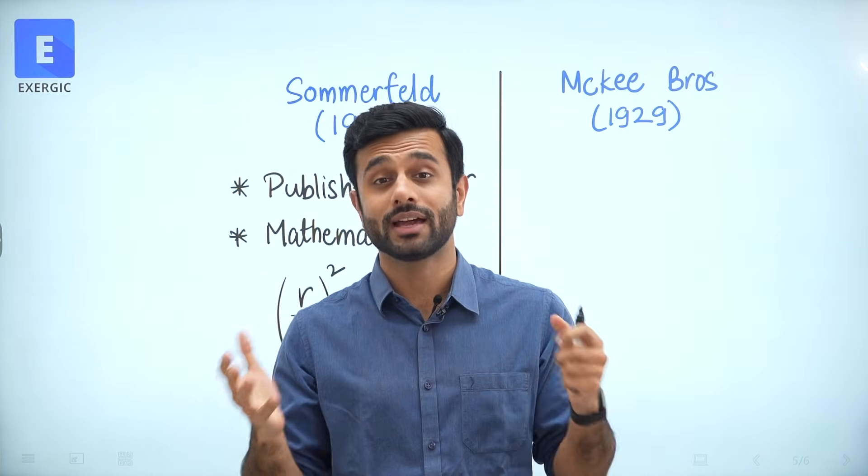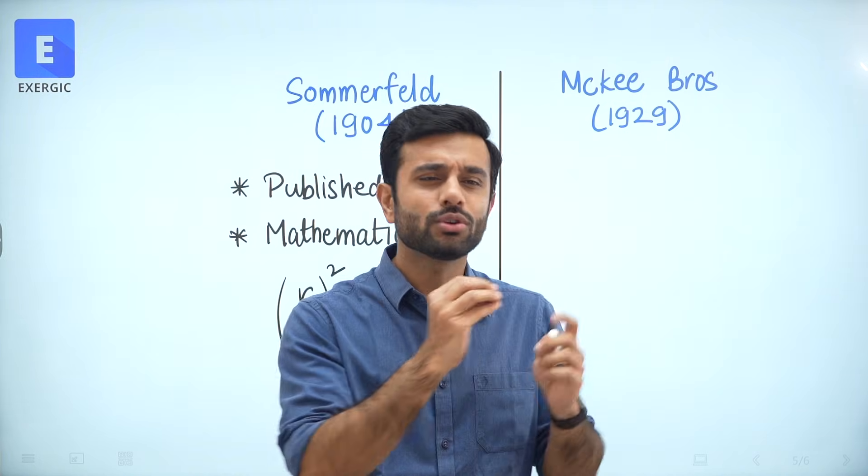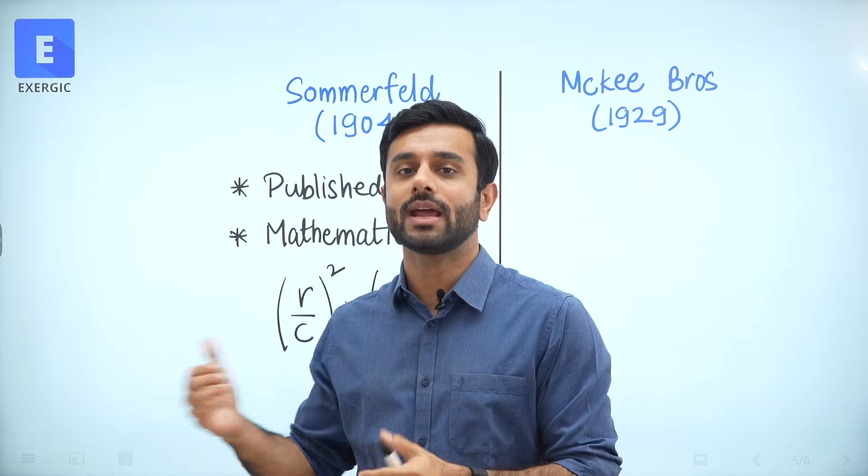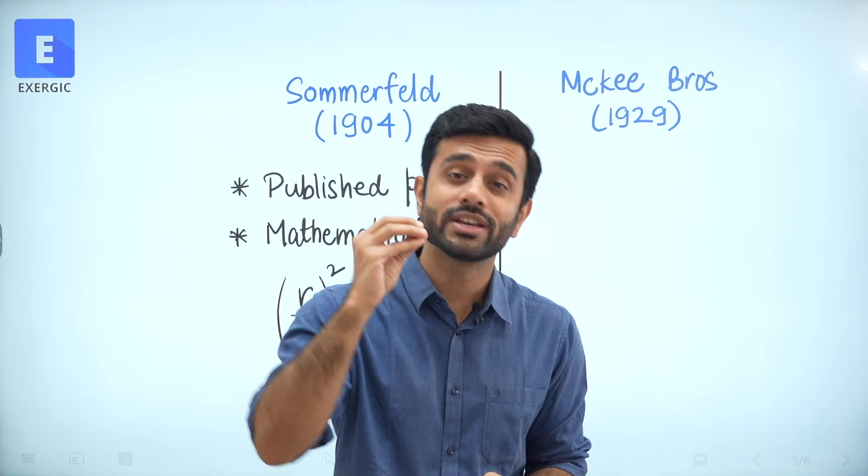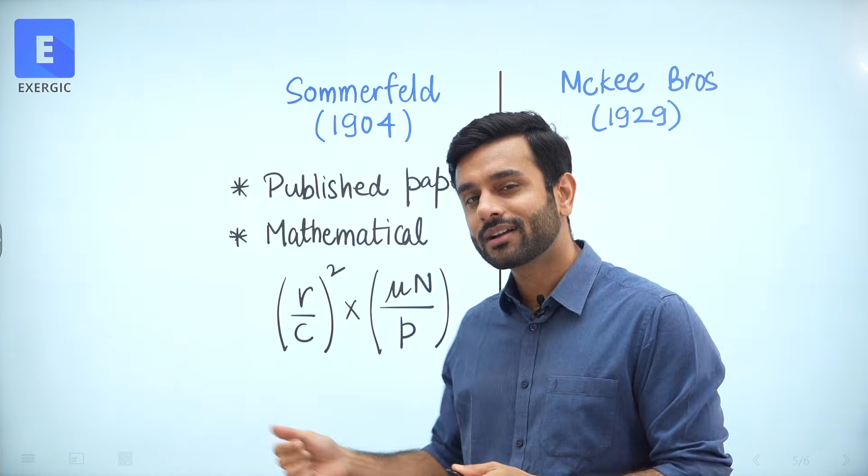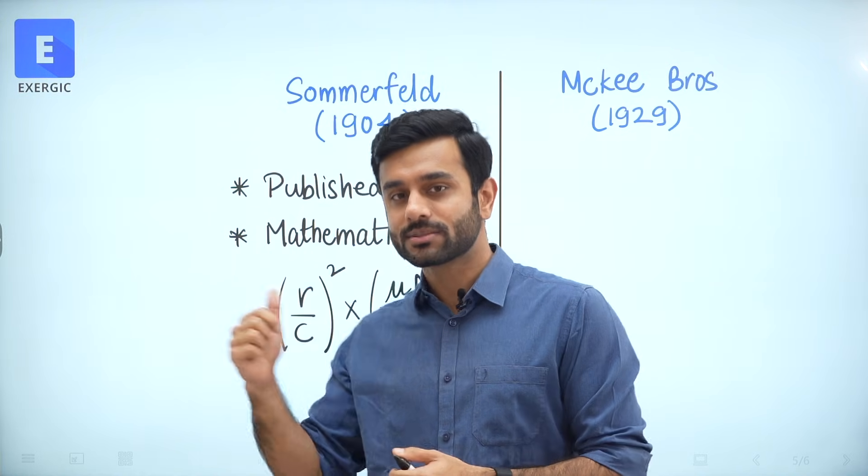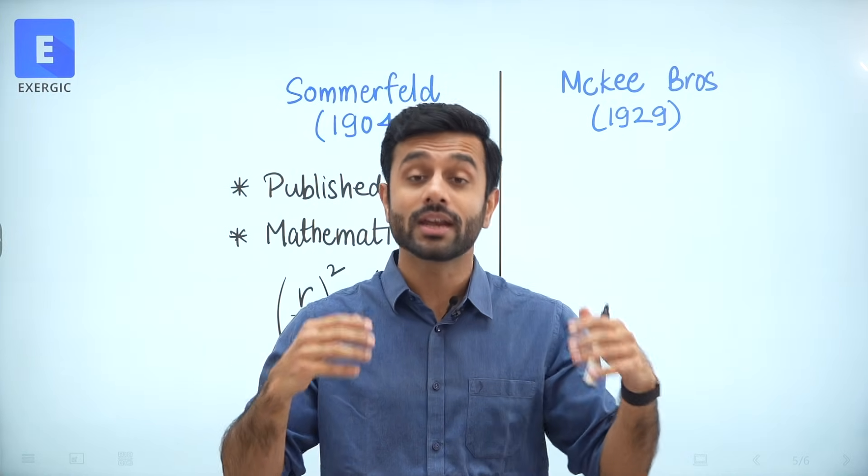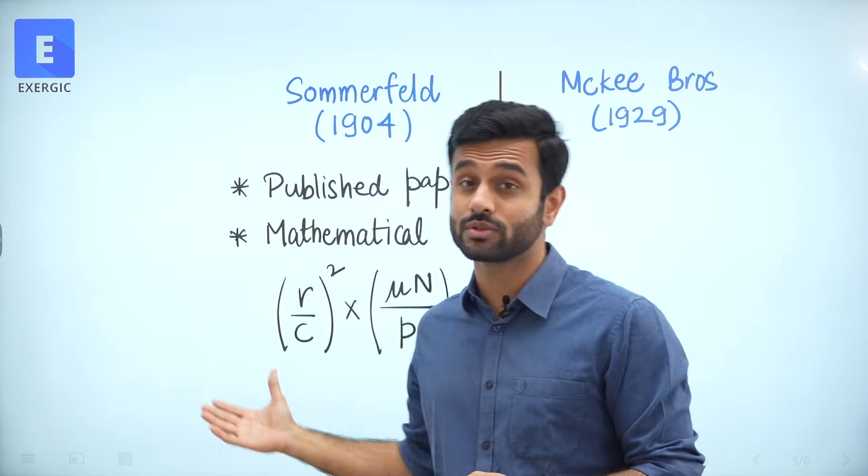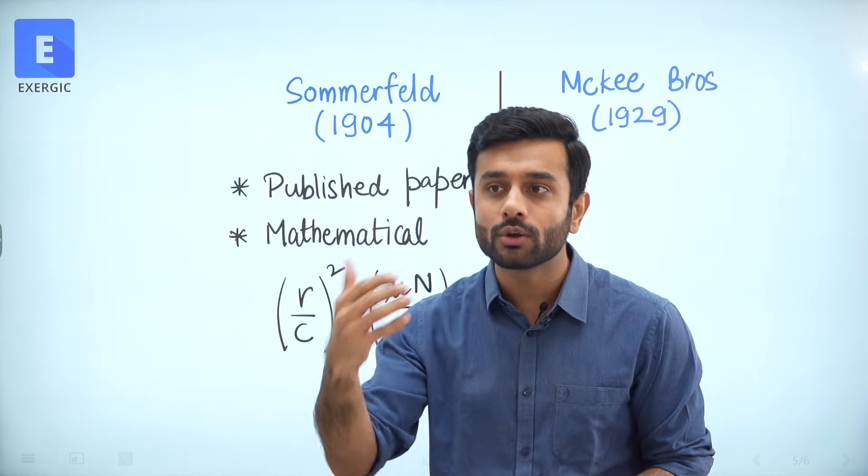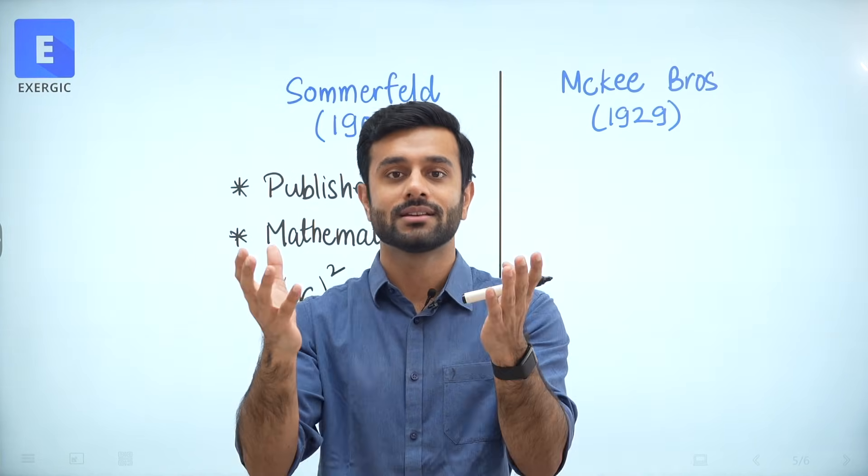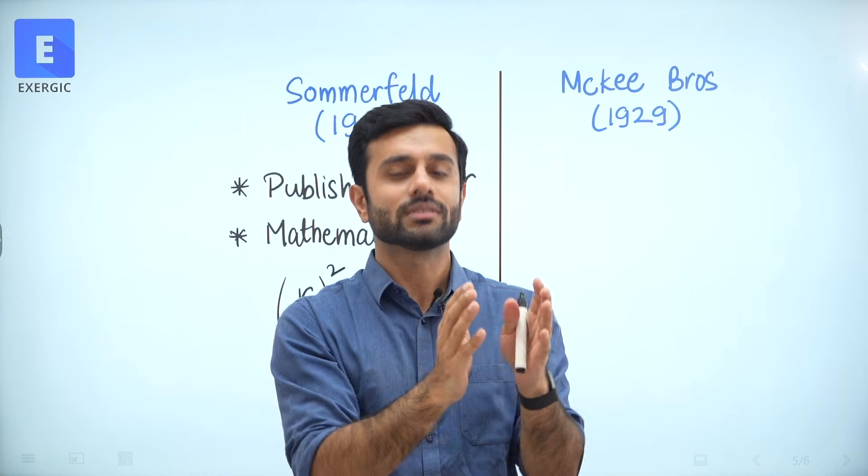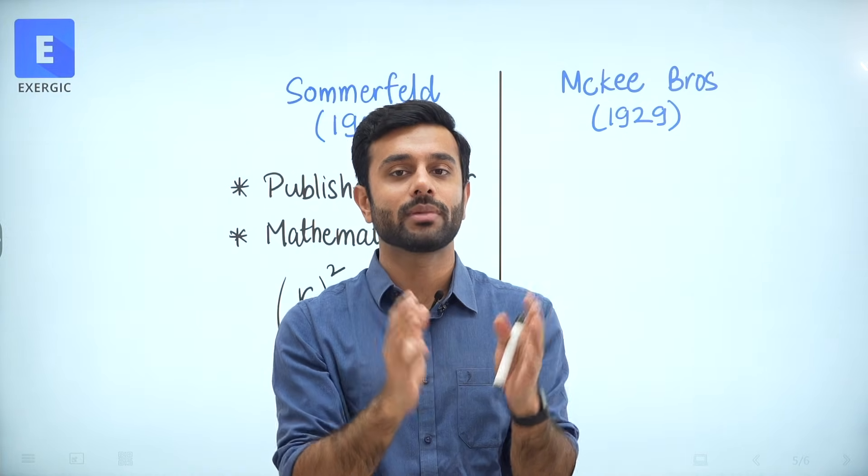Point number one, it came through a published paper. And it was theoretically, mathematically given. And this was the formula as we already know. On the contrary, McKee brothers gave this formula, their formula, 25 years after this, in 1929. What was the need of that? Let's first understand, what was the need of another formula? This formula was good enough, well accepted, mathematically derived, no confusion, accurate formula.